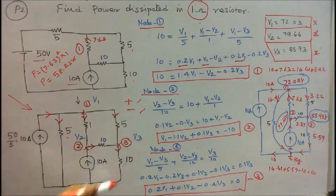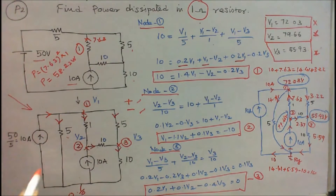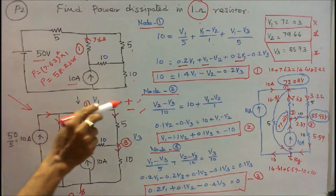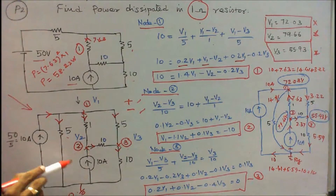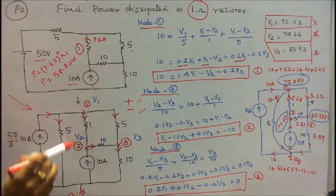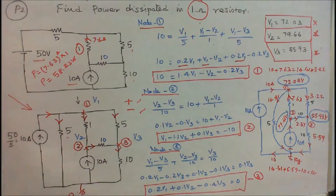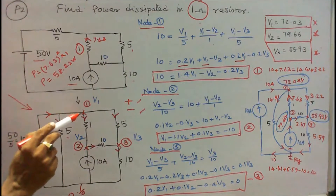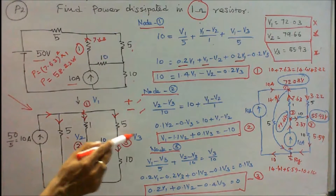Now I redraw the circuit and mark the current directions, assuming current entering the junction is positive and current leaving is negative. The circuit consists of four nodes: node 1, node 2, node 3, and a reference node. The node voltages are V1, V2, and V3.